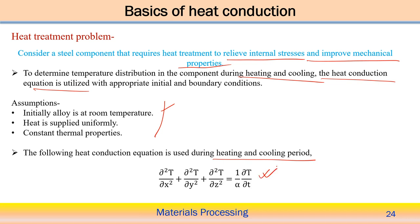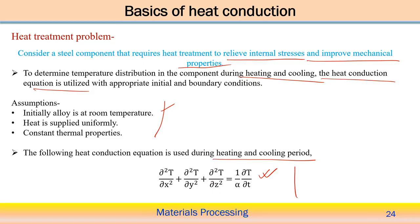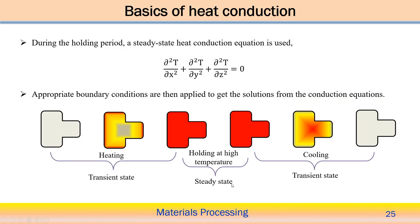The following heat conduction equation is used during the heating and cooling period: the transient 3D heat conduction equation without any heat generation term. In the heat treatment problem, heat is applied externally to the system; there is no internal heat generation within the system, so we can neglect the heat generation term. This is the way to choose the equation for the heat treatment process.